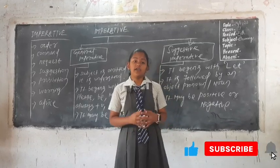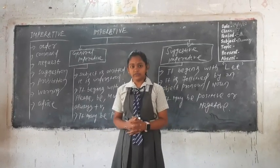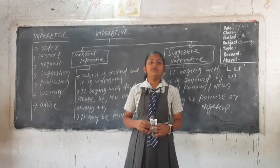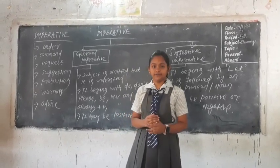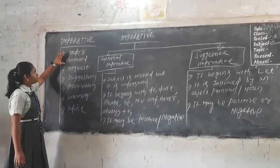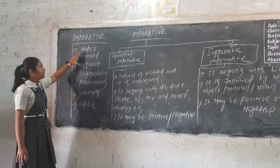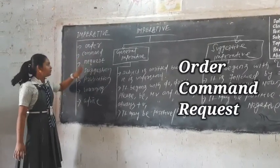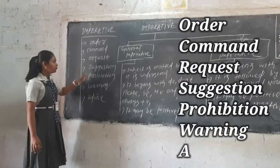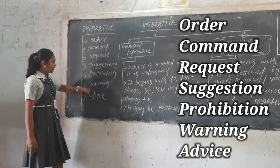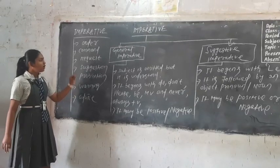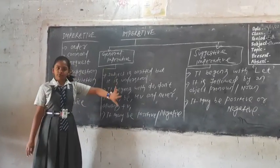In the last videos we have already discussed about the WS structure and how to convert them from active into passive. In this video we will discuss about the imperative structure. First of all, what is the imperative structure? The imperative structure is used to give an order, give a command, make a request, give some suggestion, to prohibit something — that is prohibition — to give warning, and to give advice.